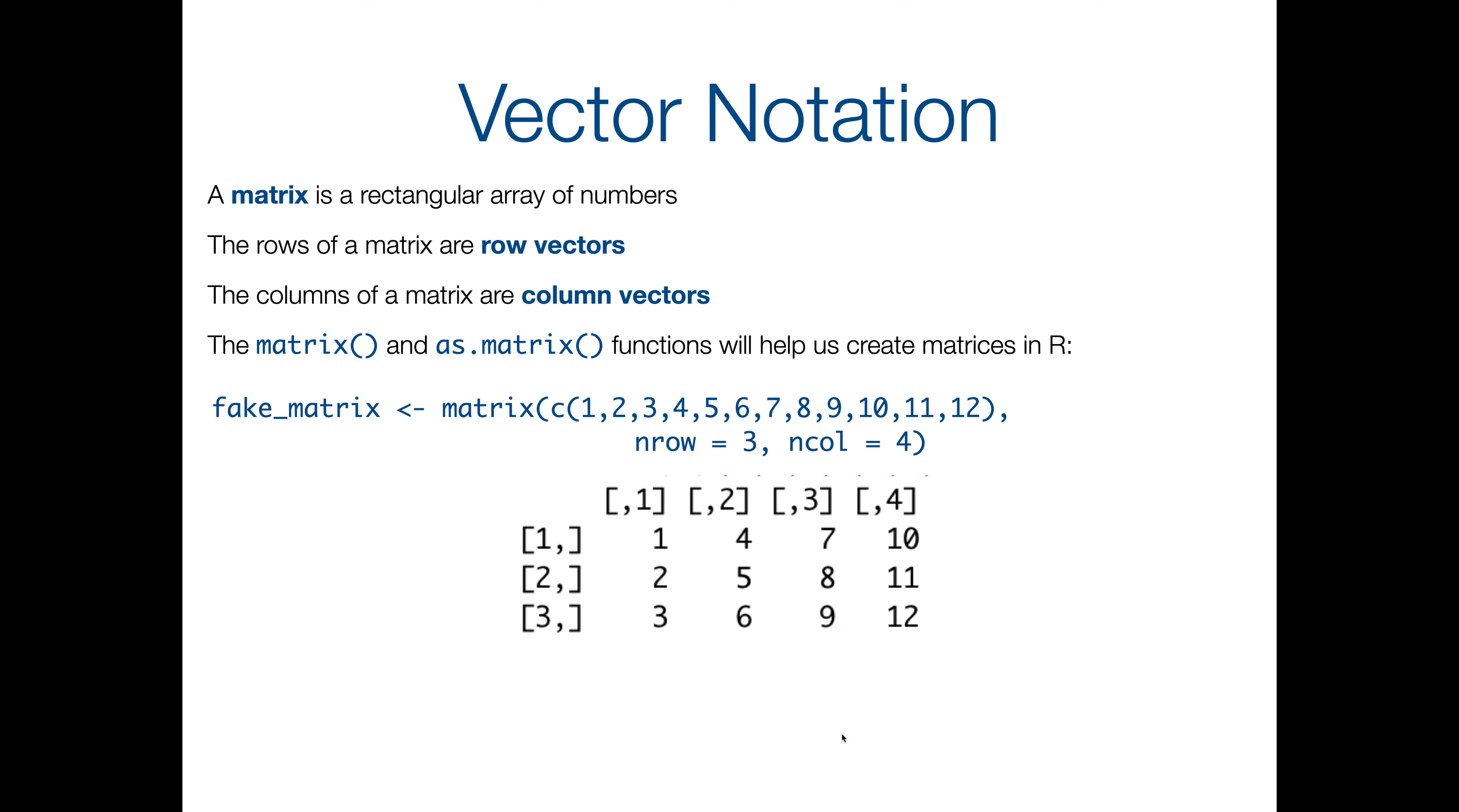So here is, if you printed fake matrix, here's what it would give you. So we've got 3 rows, 4 columns, and it shows you the indices, so that's what those brackets with a number in them are. So 1 comma nothing, that is saying show me all of the columns of the first row, nothing comma 3, that would say show me all of the rows of the third column. If you had a 1 comma 1, that would say show me the entry in the first row and first column where they intersect. So that's the notation going on with those indices. And you'll notice the way it fills it in is column-wise. So we start with the first column, 1, 2, 3, move on, 4, 5, 6, 7, 8, 9. So it doesn't fill them in by row, it fills them in by column, by default.